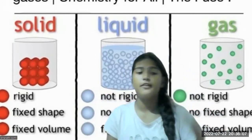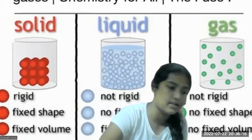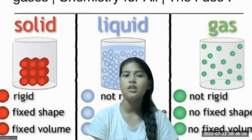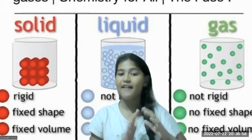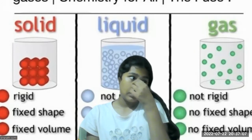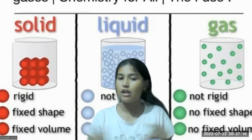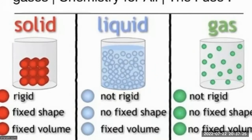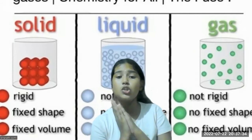Next, we are going to look at gas, where molecules are shown in green. Gas does not have a definite volume. For example, air is a form of gas. When it is stored in a balloon, it occupies the space of the balloon. But when we pop the balloon, it spreads all over the room — the gas takes up however much space is available. So gas does not have a definite volume.